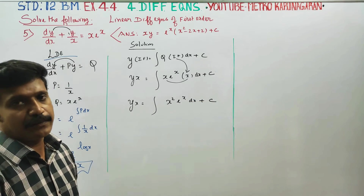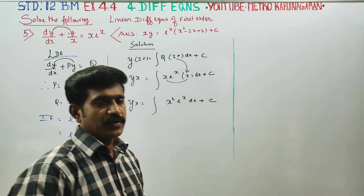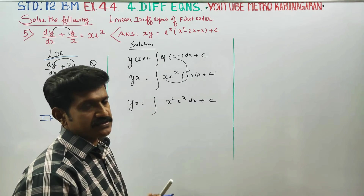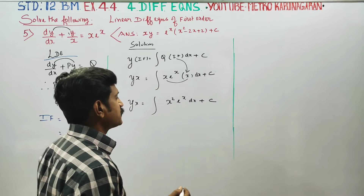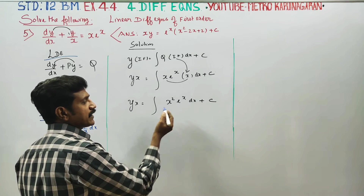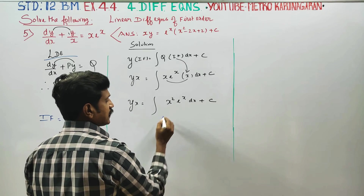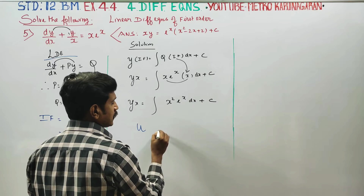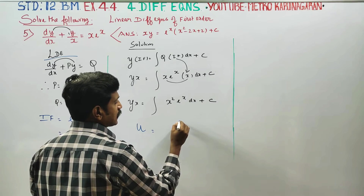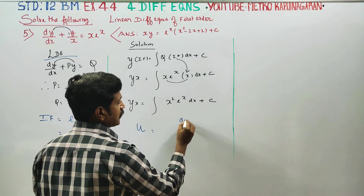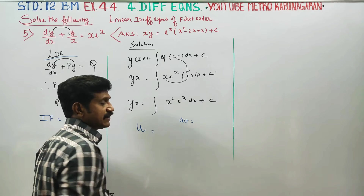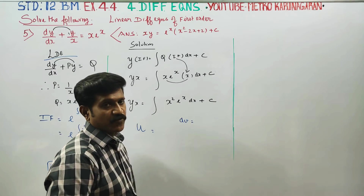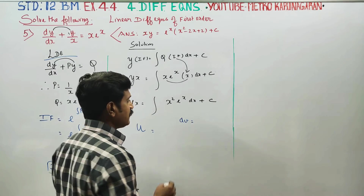To integrate x squared e power x, we use Bernoulli's formula from the second chapter on integration, which is the UDV formula — integration by parts.